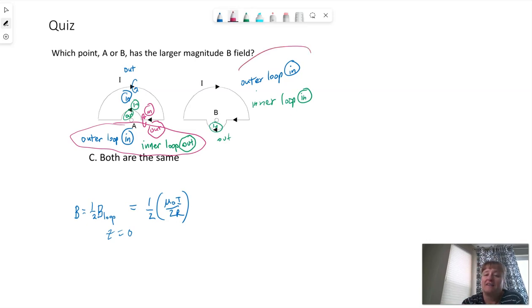When we add these two magnetic fields together, the field due to the outer loop plus the field due to the inner loop, because they're in the same direction, we'll get a larger vector that points into the screen.